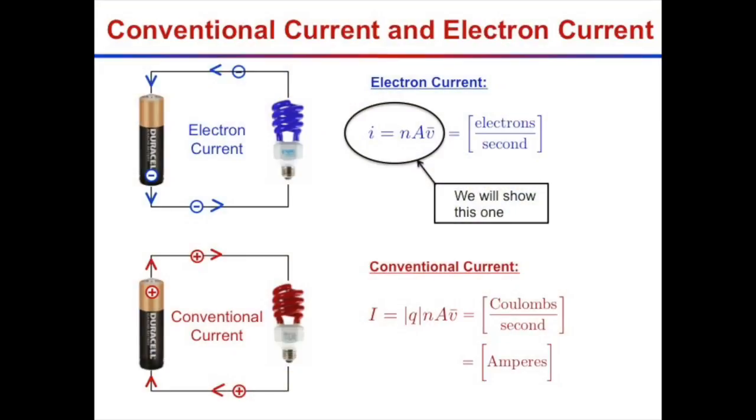What we're going to do next is calculate, from the idea of individual particles moving by, the electron current in terms of n, A, and V. Little n is the number of electrons per unit volume, A is the cross-sectional area, and V is the velocity.